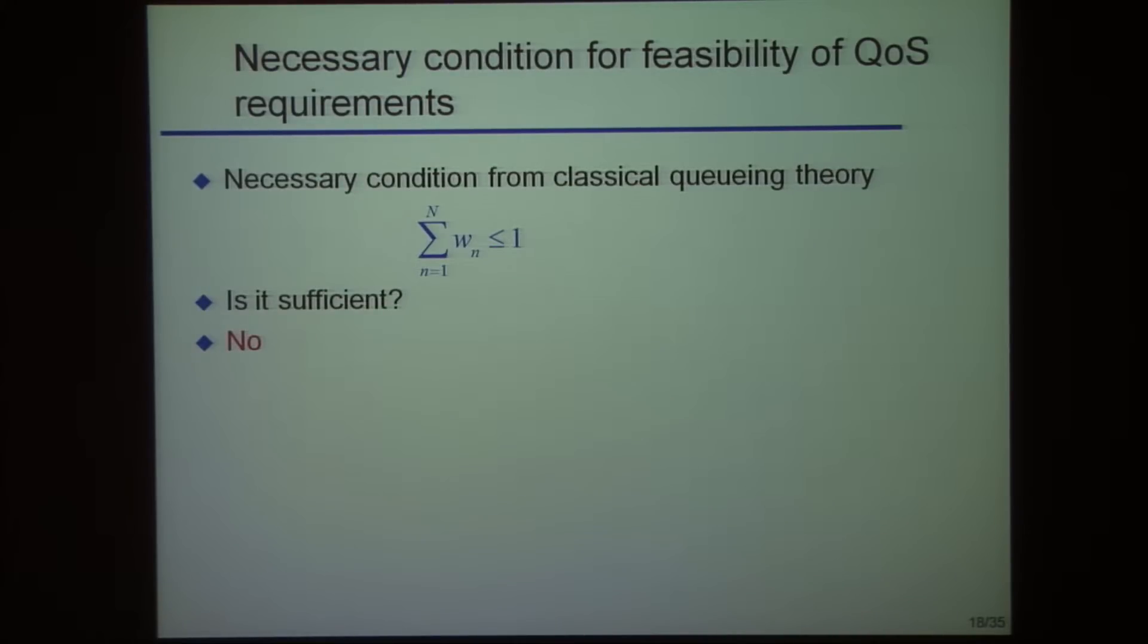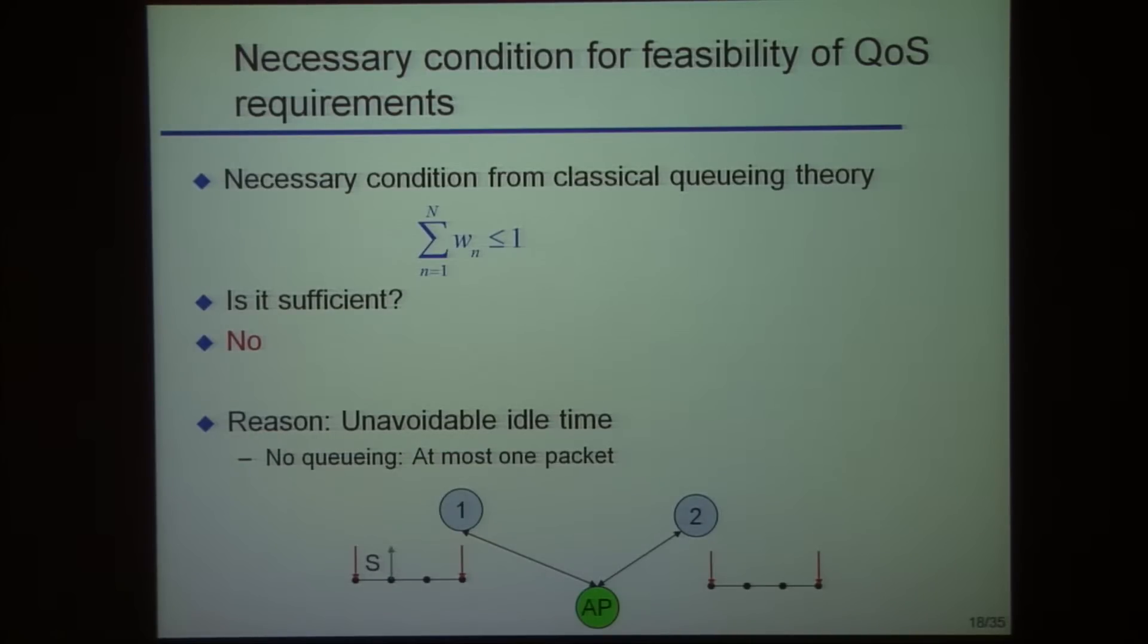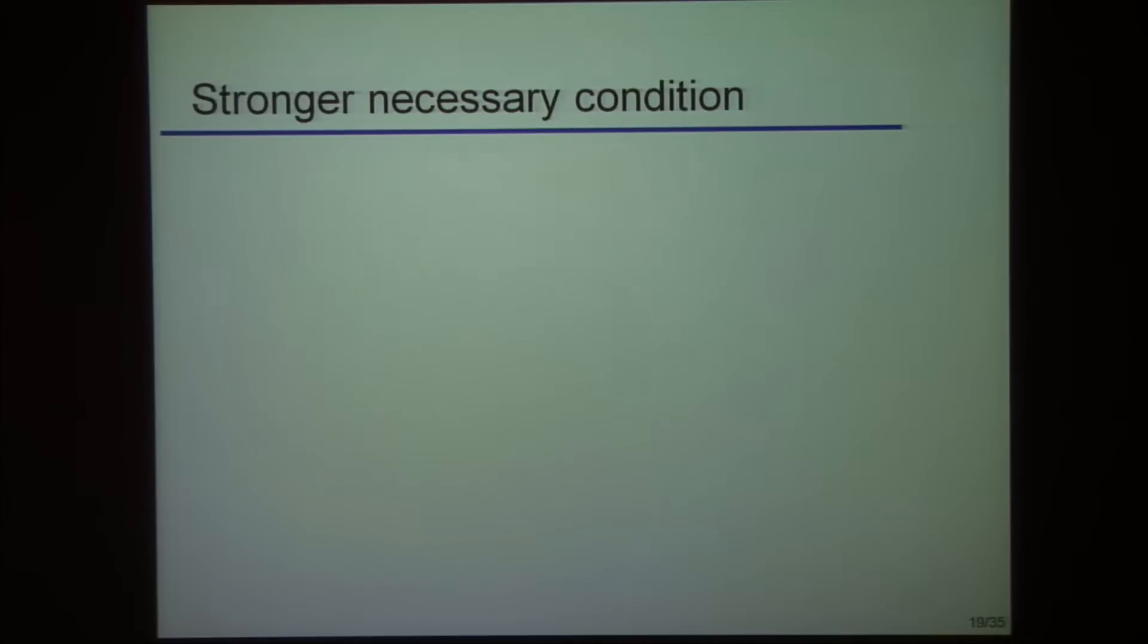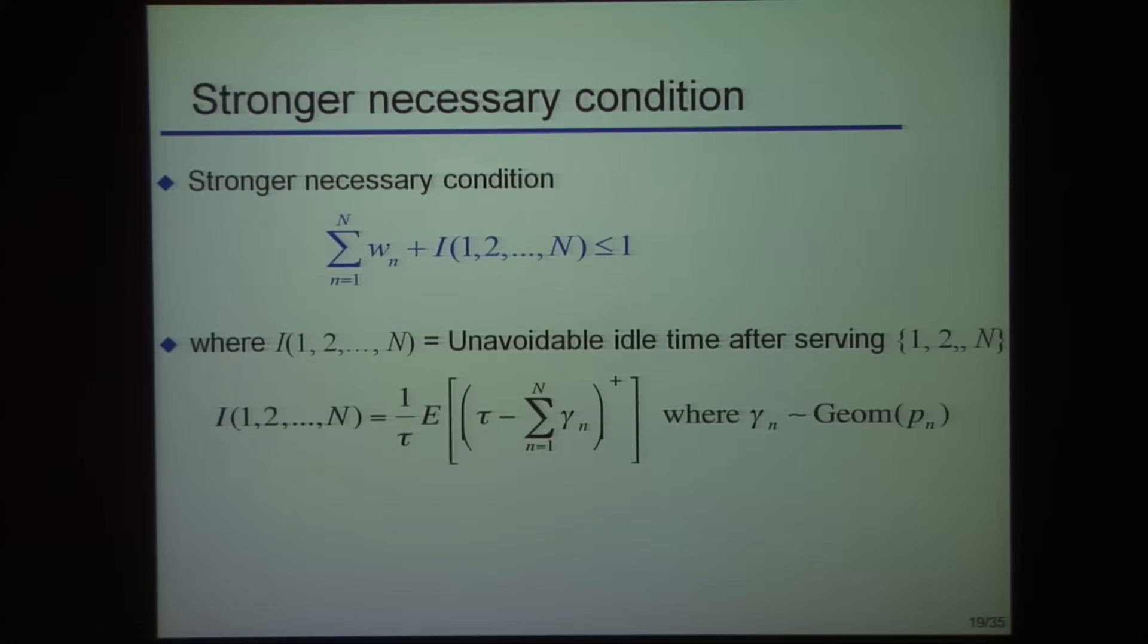Something very interesting happens when you have deadlines. There is unavoidable idle time - you cannot stay busy hundred percent of the time. To see that, take this simple situation with two clients, period is three. In the first slot you work on a client and it's successful, the packet reaches its destination. In the second slot you work on the next one, it's successful. Now there are no more packets in the system - there's no queuing because you don't want to build up delays. So the third slot has to be idle. There's a certain fraction of time that you have to be idle. So we go back and calculate that idle time as the total busy time plus unavoidable idle time. Is that sufficient? It turns out that's also not sufficient.